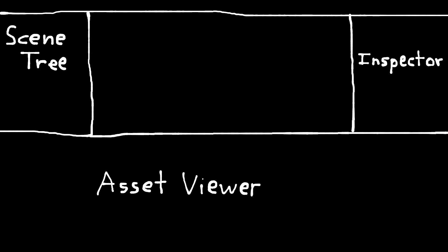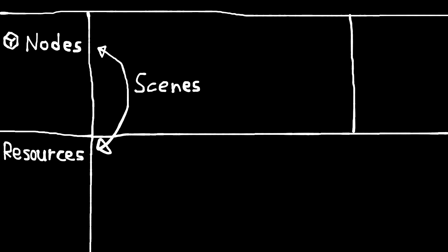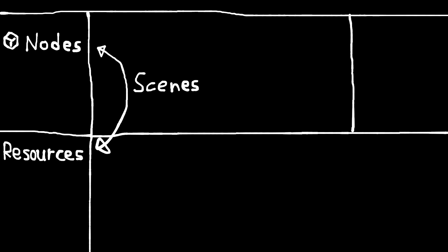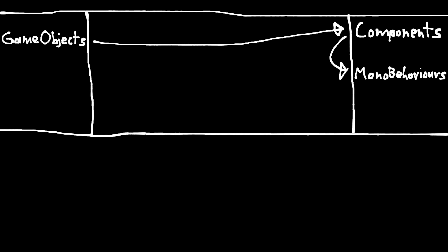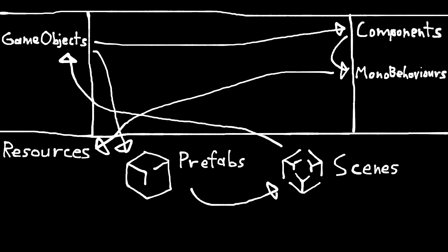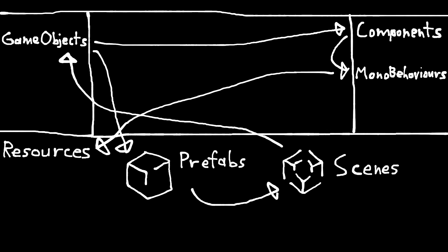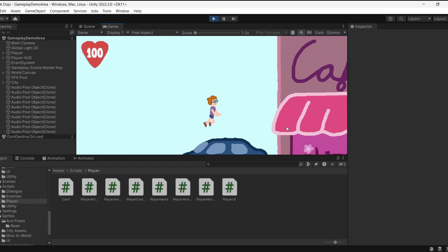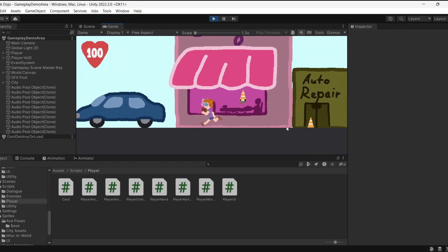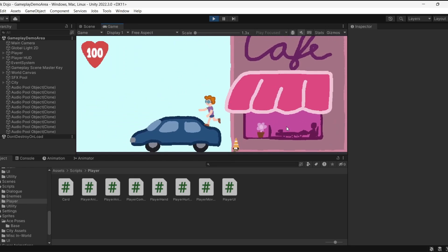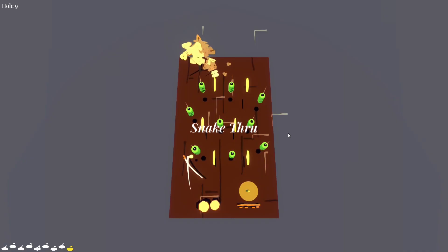But where Godot largely stops at nodes and resources, with scenes to connect the two, Unity has game objects, components, MonoBehaviour scripts, resources, prefabs, scenes — I could go on. Don't get me wrong, all these ideas serve distinct, useful purposes, but Godot has the hindsight to generalize them into a few key concepts.